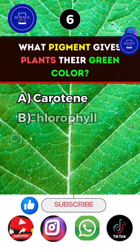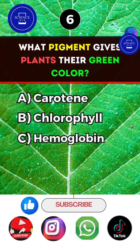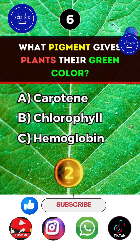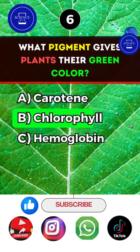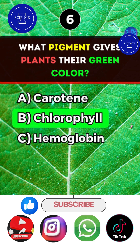What pigment gives plants their green color? Answer B. Chlorophyll.